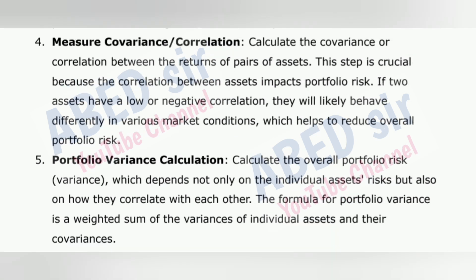Step 4: Measure covariance/correlation — calculate the covariance or correlation between the returns of pairs of assets. This step is crucial because the correlation between assets impacts portfolio risk. If two assets have a low or negative correlation, they will likely behave differently in various market conditions, which helps to reduce overall portfolio risk. Step 5: Portfolio variance calculation — calculate the overall portfolio variance, which depends not only on the individual assets' risks but also on how they correlate with each other. The formula for portfolio variance is a weighted sum of the variances of individual assets and their covariances.